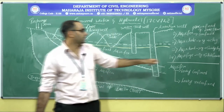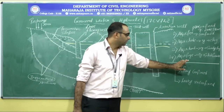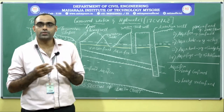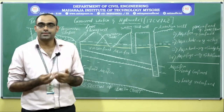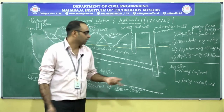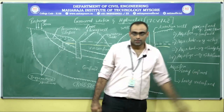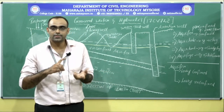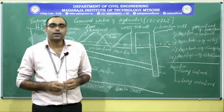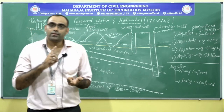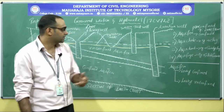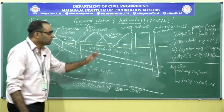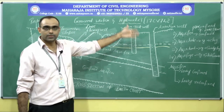The next geological formation is the aquifuge. Aquifuge does not have any sort of water stored in it, so the question of yielding water does not arise. An example is solid granite. Aquifuge does not yield or hold any water because it is very weak in both porosity and permeability.